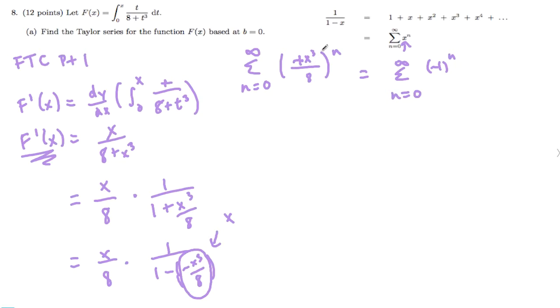So this is the same thing as saying negative 1 to the n times x to the third to the n. Right? That's just exponent rules.